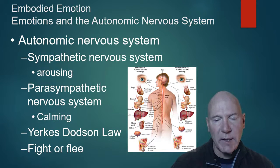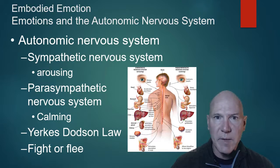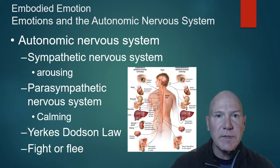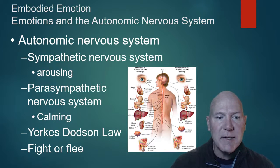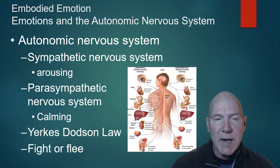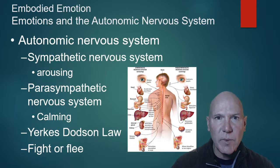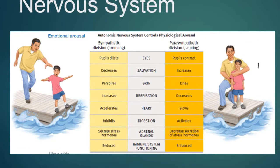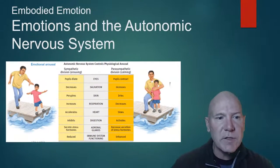Embodied emotion involves our nervous system — it invokes our sympathetic nervous system, which you might remember from the biological basis of behavior. The sympathetic nervous system is our fight-or-flight response, and the parasympathetic nervous system calms us after a threat has passed. If you remember the Yerkes-Dodson law, there is an optimal level of arousal — for easier tasks, higher arousal helps performance, but as tasks become more complicated, we need less arousal so we don't miss what we're trying to accomplish. Here's a chart of the sympathetic and parasympathetic divisions of the nervous system.